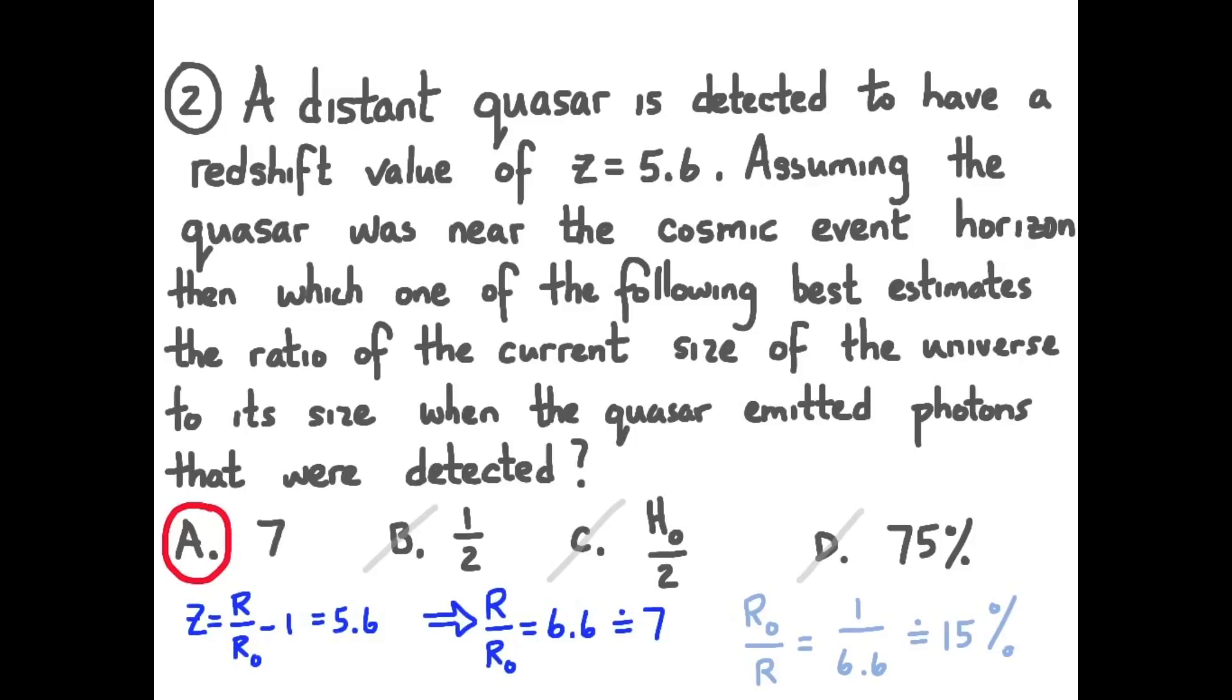Working out the reciprocal, r naught over r, 1 over 6.6, or about 15%. And what that means is the size of the universe when the photons were first emitted was about 15% the size of the universe now. So that's the size of the universe now.